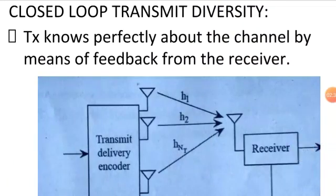Closed loop transmit diversity. In this case, the transmitter knows perfectly about the channel. This information is obtained by means of feedback from the receiver.